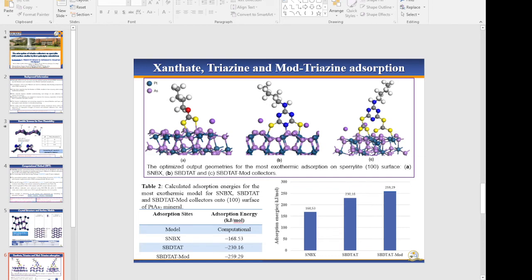We adsorbed three different collectors—xanthate, triazine, and triazine-modified collectors—on the 100 sperrylite surface to check the behavior and bonding chemistry of the collectors with the surface.